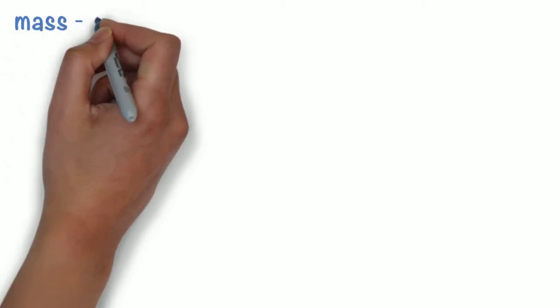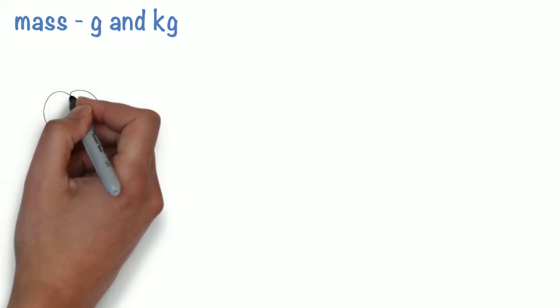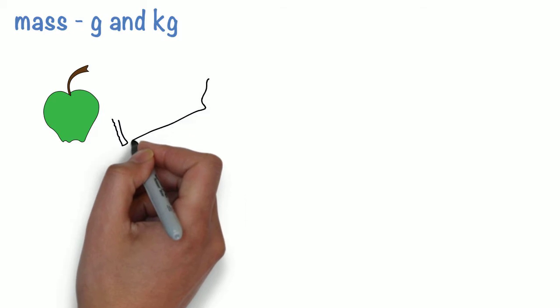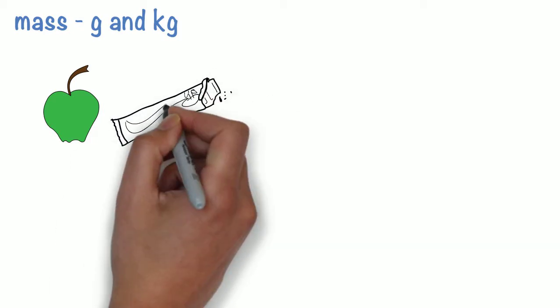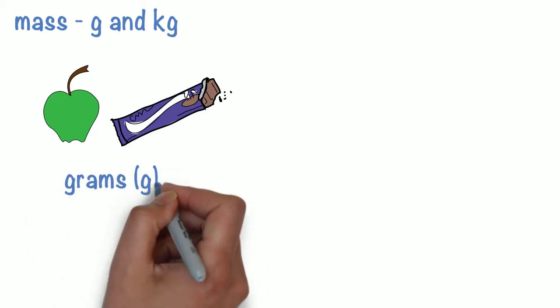Mass is measured with grams and kilograms. Grams are used to measure small amounts like fruit, vegetables, or even chocolate bars. Grams are also very helpful in cooking.